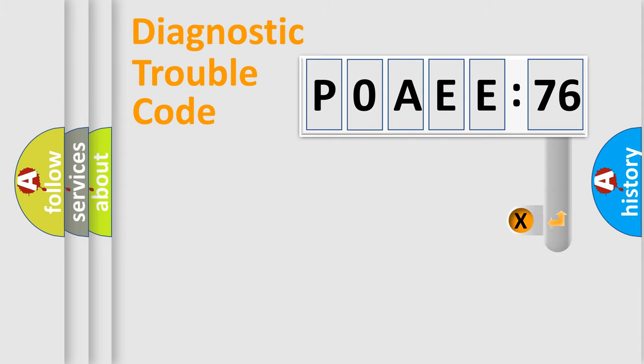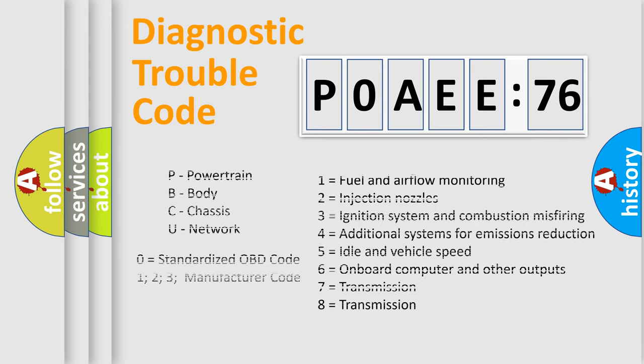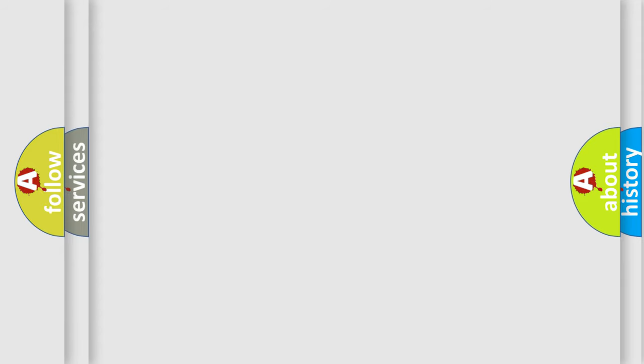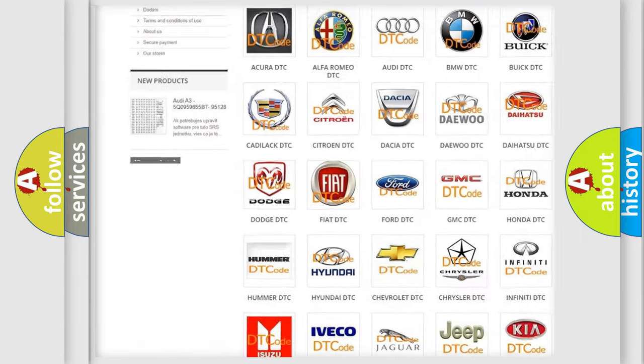Our website airbagreset.sk produces useful videos for you. You do not have to go through the OBD2 protocol anymore to know how to troubleshoot any car breakdown. You will find all the diagnostic codes that can be diagnosed in Nissan vehicles, and many other useful things.